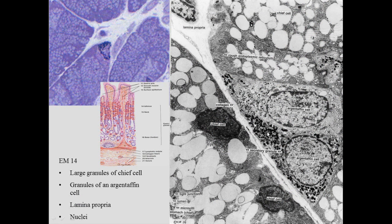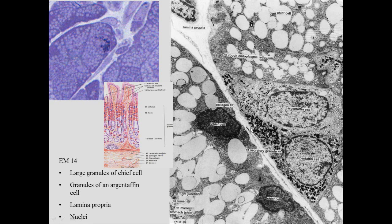There are also argentaffin cells — endocrine cells — with dark granules at the base of the cell. These cells secrete different types of granules into the lamina propria so they go into the bloodstream, not into the lumen. So the stomach has both an exocrine function through glands and an endocrine function.